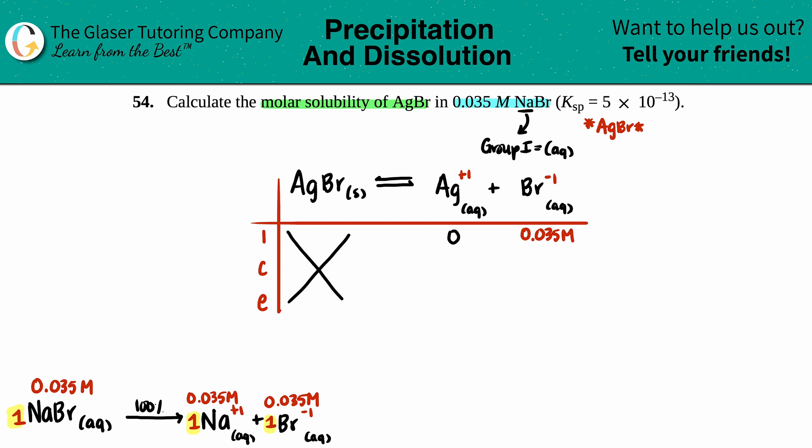But since we didn't start off with anything, you could only go up from there - plus by some value, I don't know what it is, so plus x and plus x. So now equilibrium, it would be zero plus x, so this is just x. This is 0.035 plus x, and these are your two values now that are going to go into your Ksp equation.